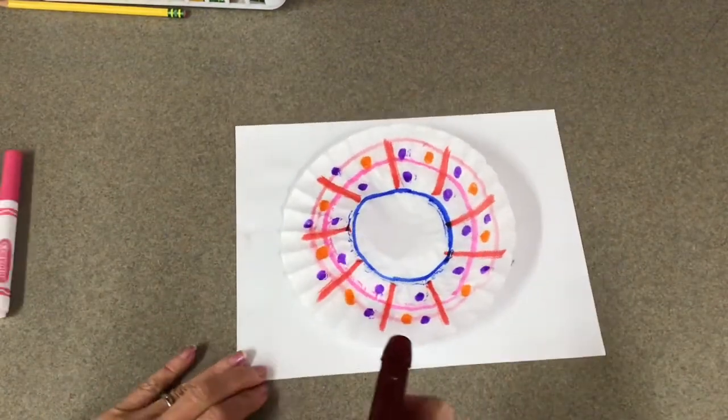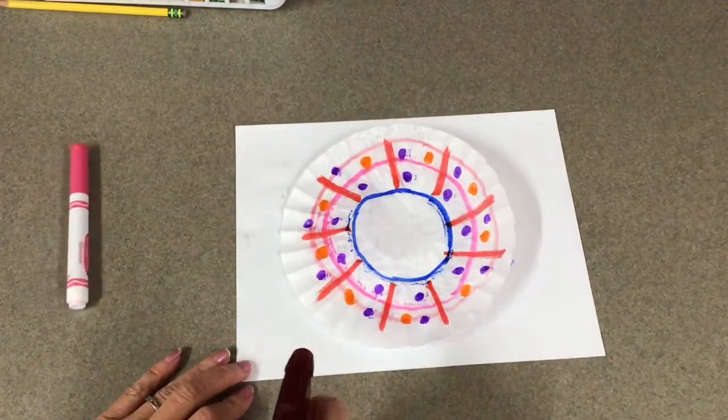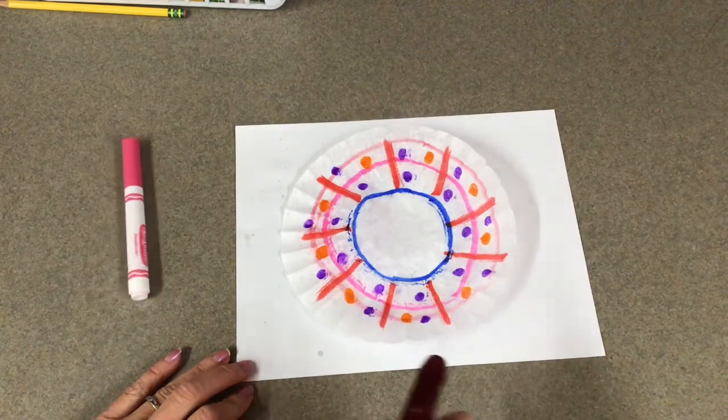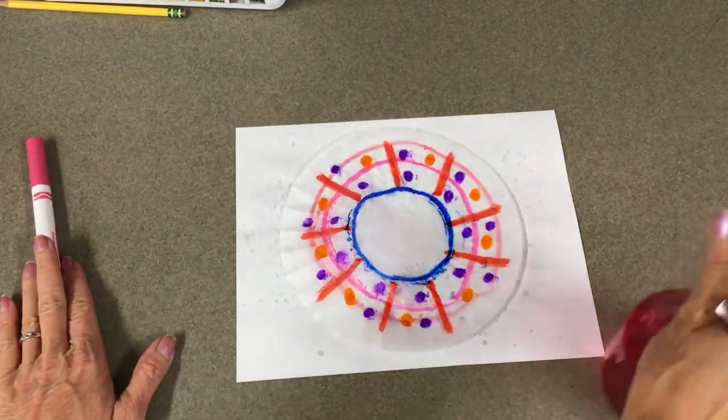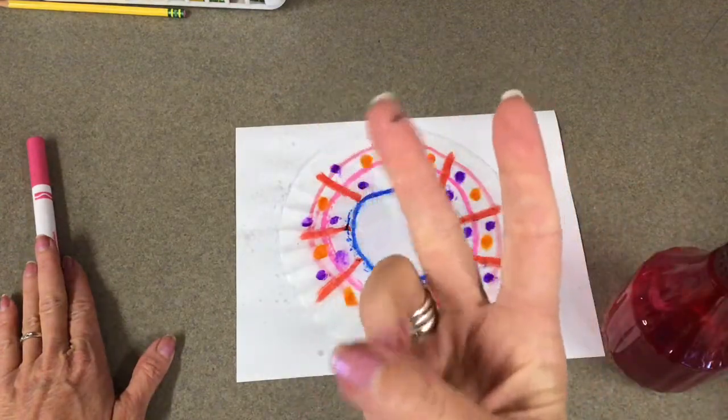I will either call you back to the counter to use a spray bottle or have a separate table. And like I said, it's three sprays. That was three sprays that Mrs. Milligan's doing. And then use your artist's eyes and watch how the colors blend together to create new colors.